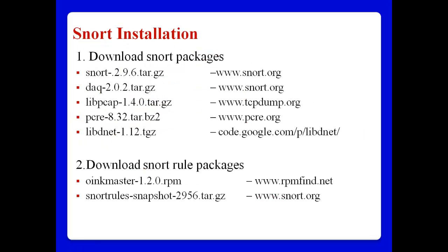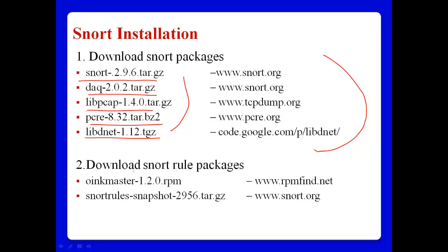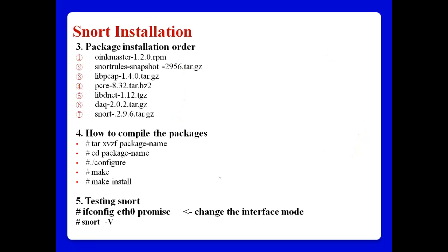Snort installation: to install Snort, we need several packages. First, download Snort 2.9.6 and DAQ. To install Snort, we also need some libraries like libpcap, PCRE, and libdnet. Please download these as well. Number two, download Snort rule packages. Number three, installation — follow the package installation order. Number four, for files with extensions .tar.gz or .tar.bz2, use the option tar xvjf [package name].